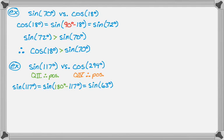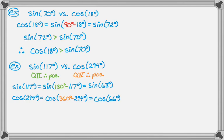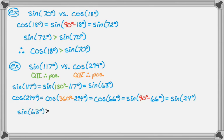Now I want to compare the same trig function. Cosine of 66 converts to sine of 90 minus 66, which is sine of 24. Since 63 is larger than 24 and we're in the first quadrant, sine of 63 is greater than sine of 24. Substituting back: sine of 117 is greater than cosine of 294. Make sure you actually answer the question!